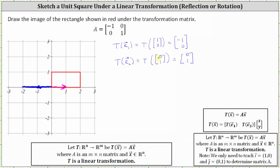Now let's plot the vector (0, 1). This would be the vector along the positive y-axis. The transformation of this vector is the same vector (0, 1), and therefore this side of the rectangle does not change under the transformation. Now that we have the transformation of two of the four sides of the red rectangle, we can complete the rectangle knowing the opposite sides will be parallel.